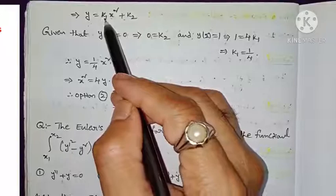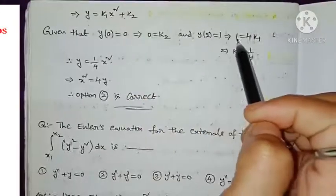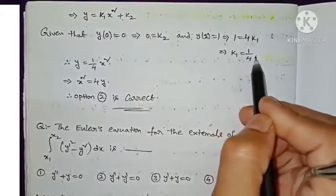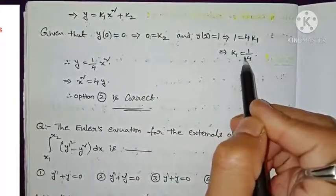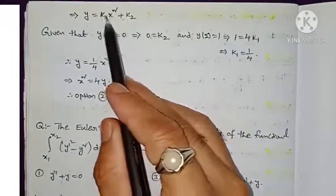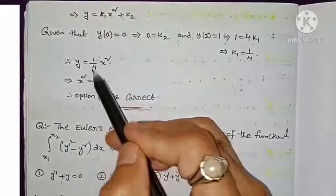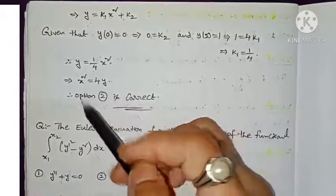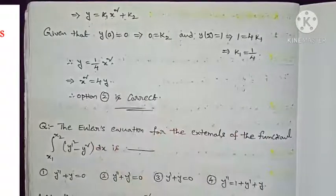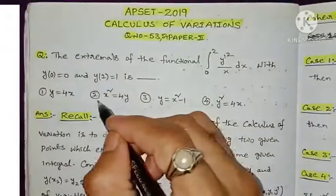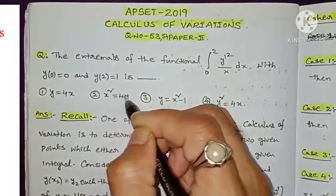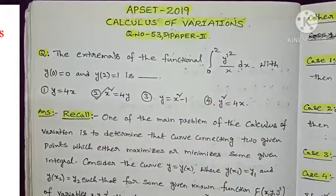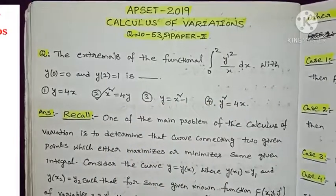Substituting the values k₁ = 1/4 and k₂ = 0 into y = k₁x² + k₂, we get y = (1/4)x², that is x² = 4y. Therefore option number 2 is the correct answer.